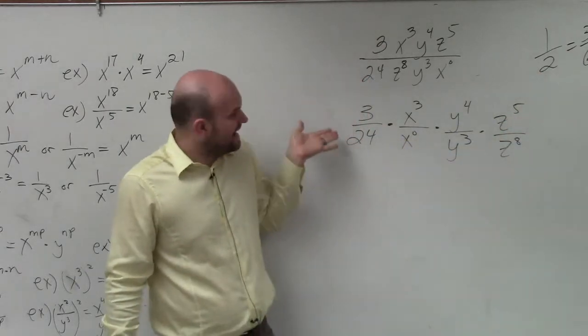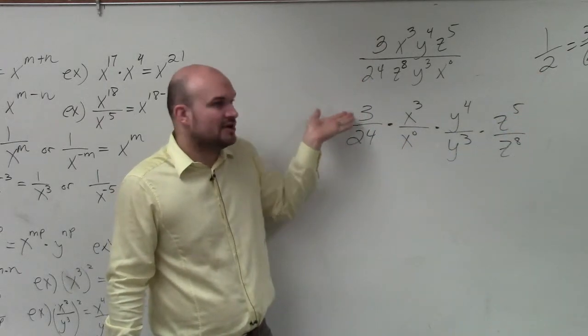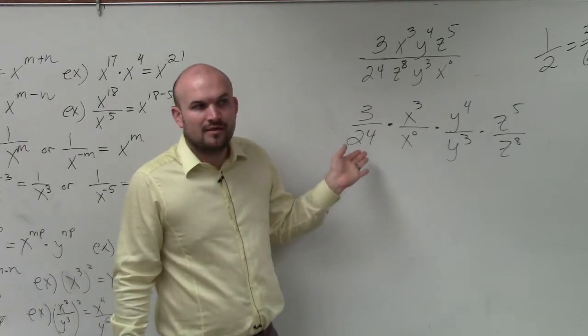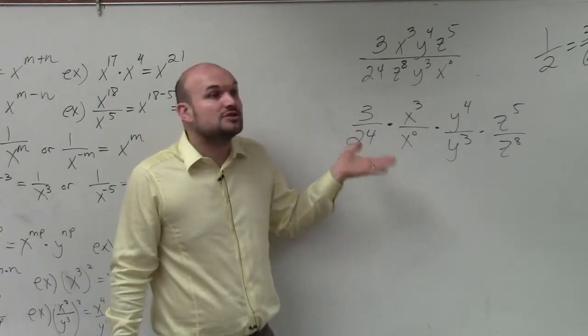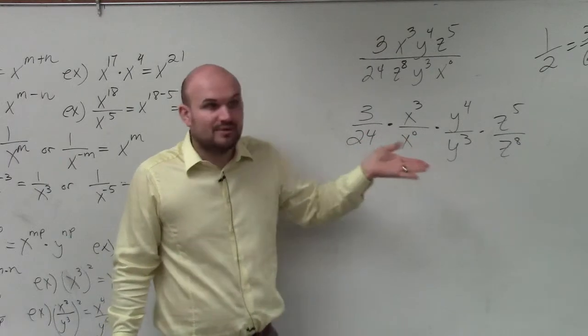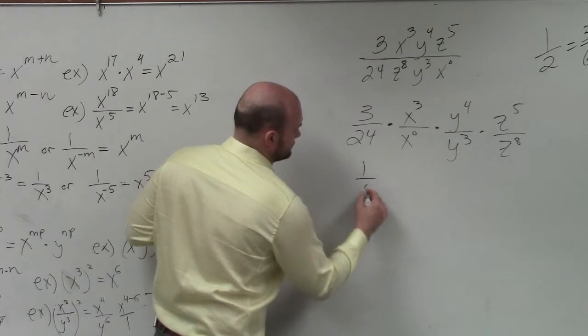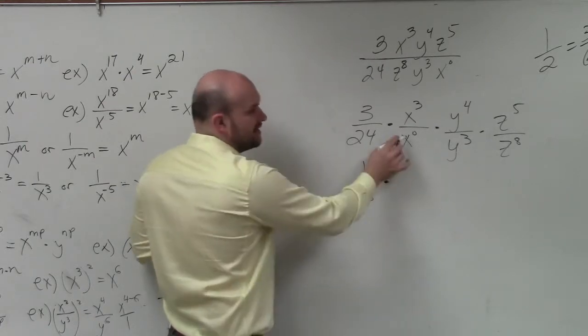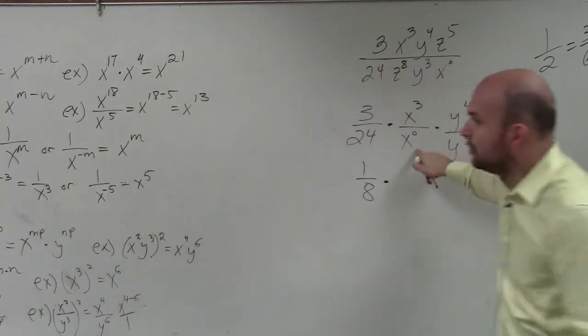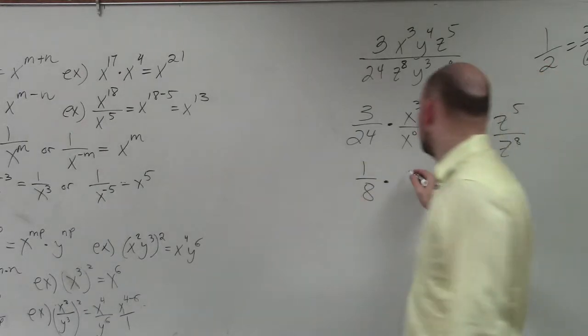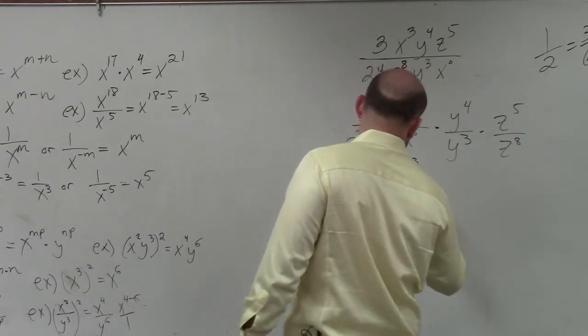So can we divide by a number in the numerator and denominator to simplify 3 24ths? 3. Yeah. So if we divide by 3, we would obtain 1 eighth. Now here, if we use our zero rule, our zero power rule, we have x to the zero is equal to 1, right? So really, I have x cubed over 1.